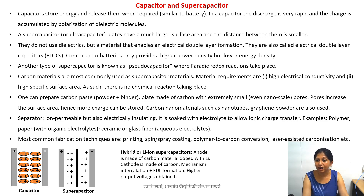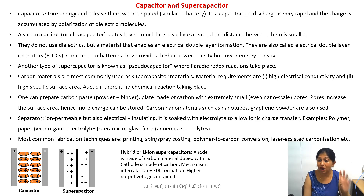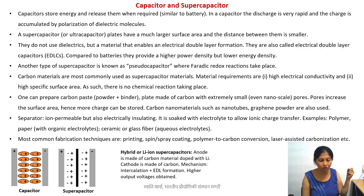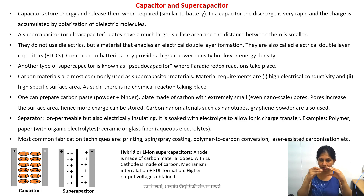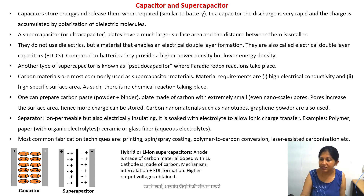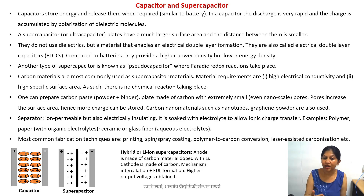In these hybrid devices, the anode is made of carbon but has lithium-ions doped into it, and the cathode is also made of carbon. The mechanism is a hybrid between battery and capacitor - you have lithium-ion intercalation, which is the process where lithium-ions go inside an electrode and cycle between layers of a material such as carbon layers during charge and discharge. Combined with the double-layer formation, you have both mechanisms, which is why these are hybrid devices, and they provide much higher output voltages.